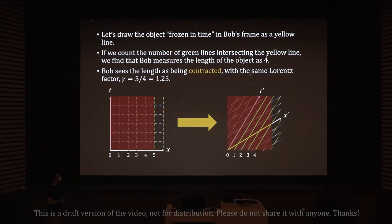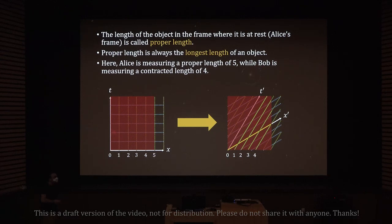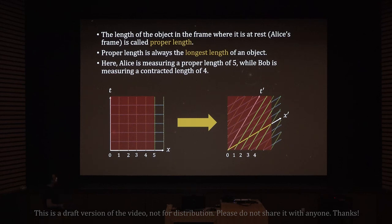Bob sees the length as contracted by the same Lorentz factor of five-fourths or 1.25. This is the opposite of time dilation — Alice sees the length as five and Bob sees it contracted to four. The length of the object in the frame where it is at rest — Alice's frame — is called the proper length, analogous to proper time. Proper length is always the longest length of an object, the opposite of proper time which is always the shortest time. Alice is measuring the proper length of five while Bob is measuring a contracted length of four.